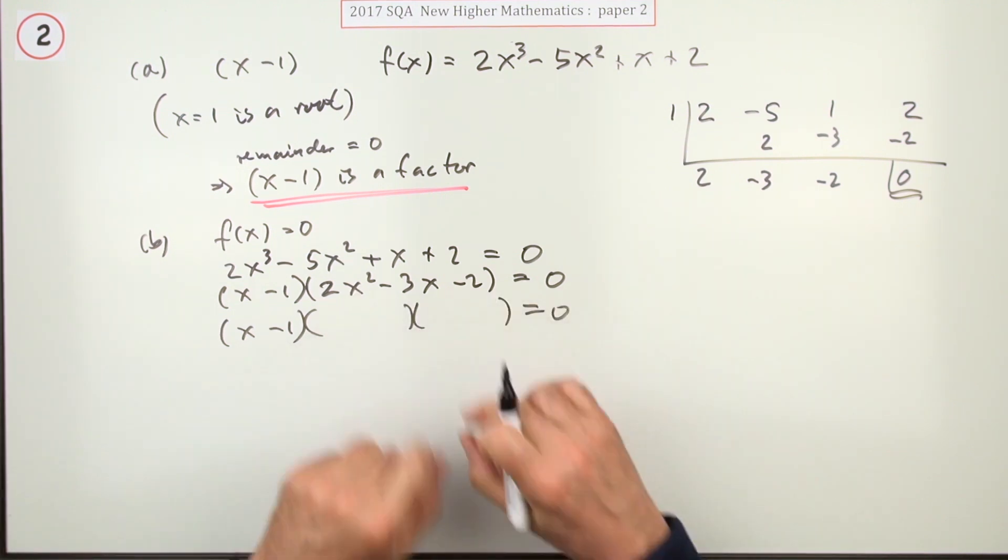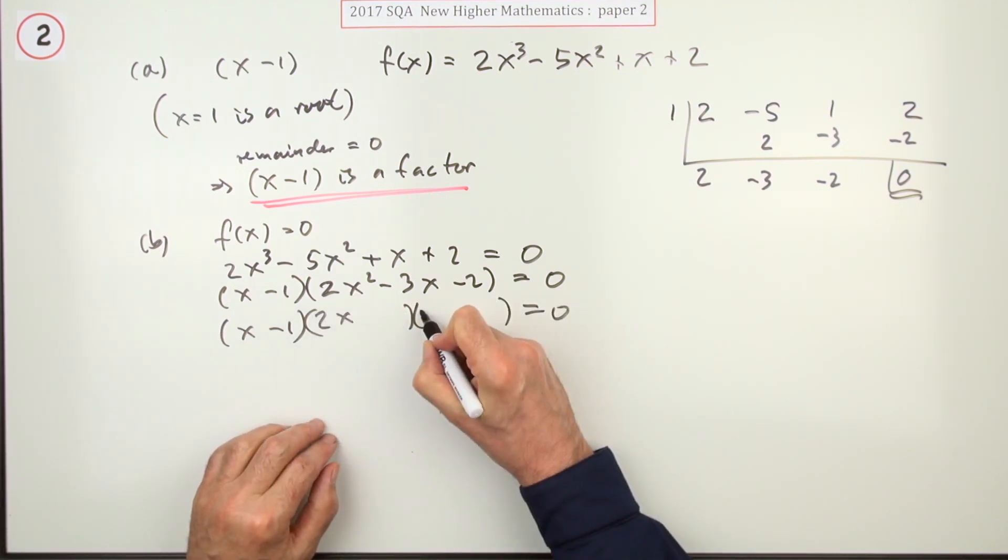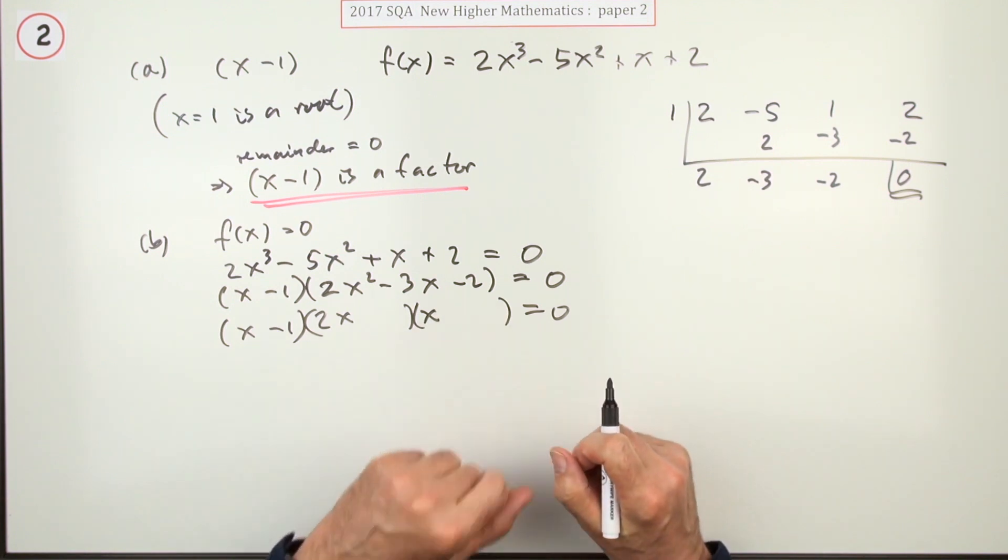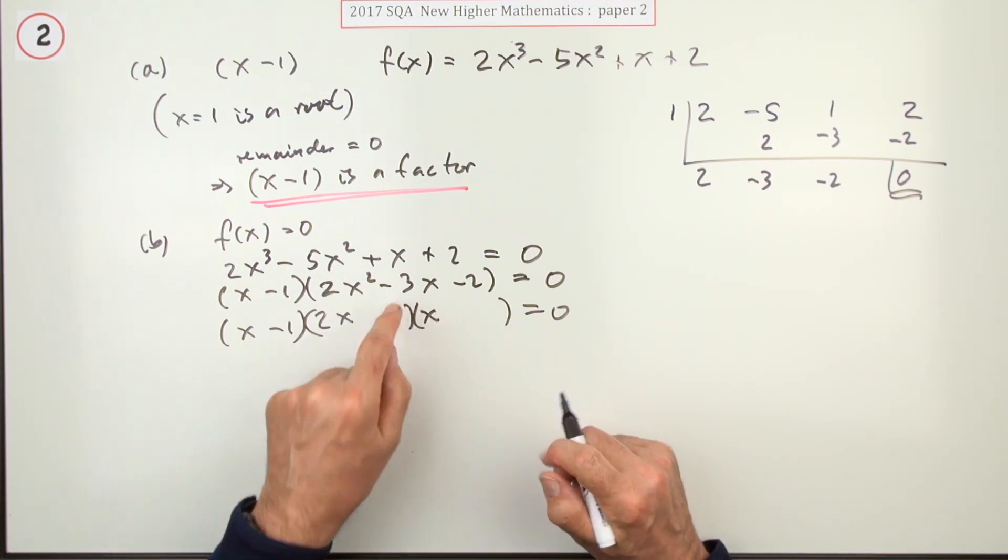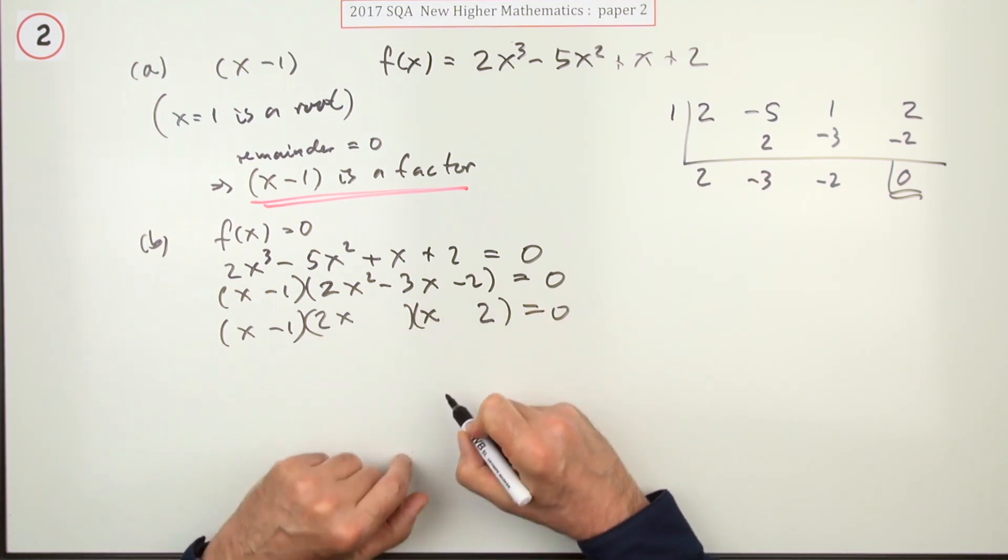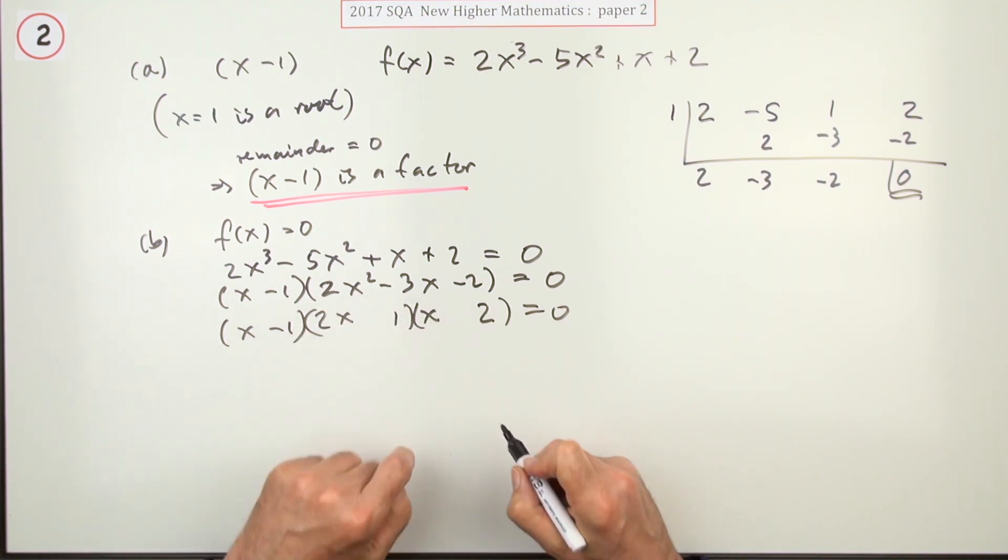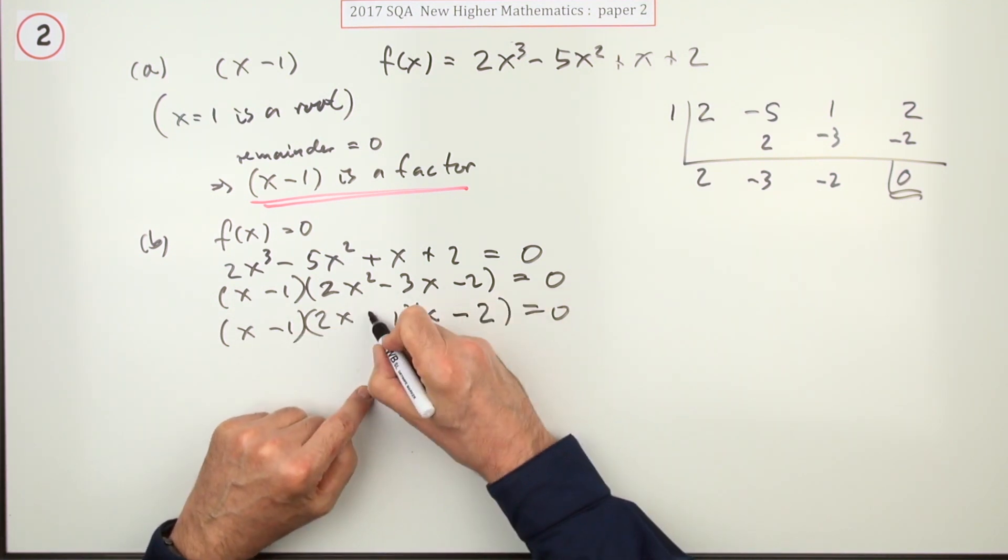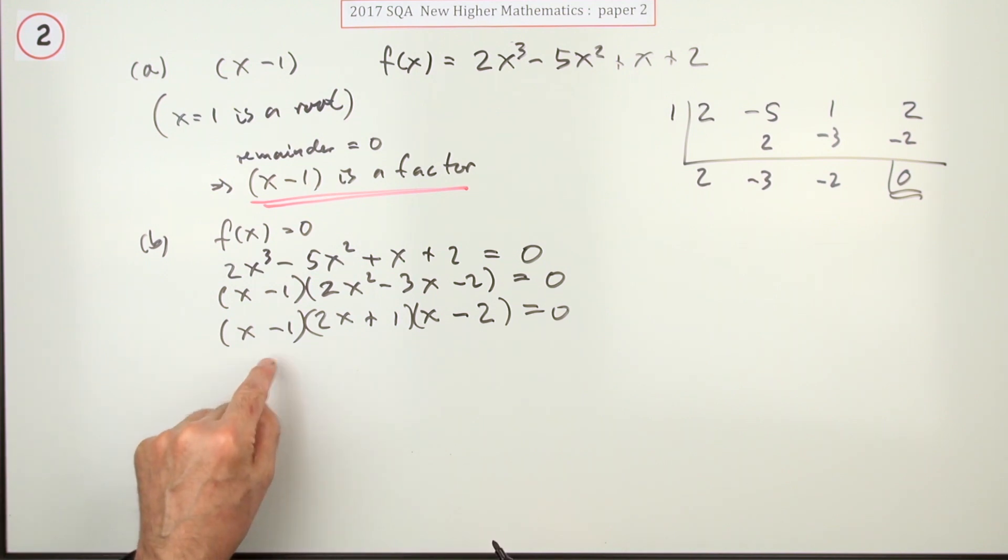Now it just remains to factorize this, and it should be fairly straightforward. It can only be 2x times x, it can only be a one times a two. I want a difference of three, so I better put the two there to make a four, and the negative will go to the larger one.